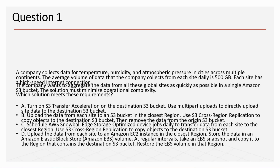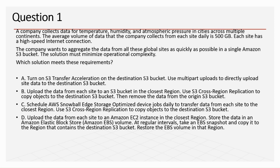Our first question: a company collects data for temperature, humidity, and atmospheric pressure in cities across multiple continents. The average volume of data collected from each site daily is 500 GB. Each site has a high-speed internet connection. The company wants to aggregate the data from all global sites as quickly as possible in a single Amazon S3 bucket. The solution must minimize operational complexity.